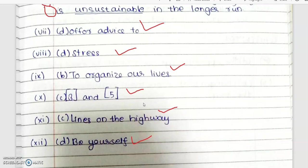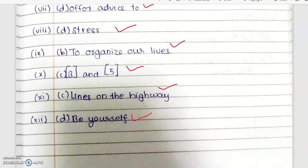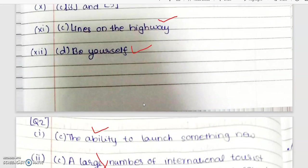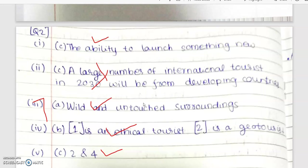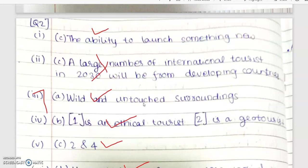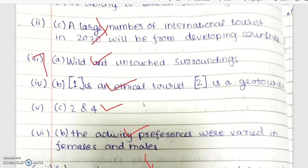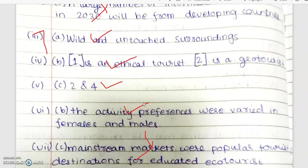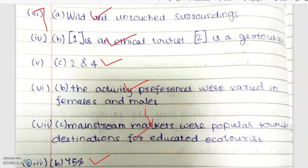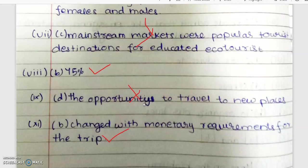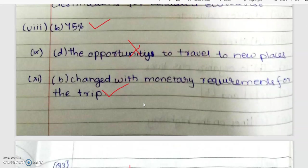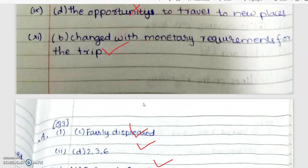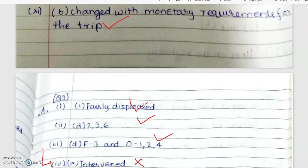Give your suggestions on how the student can improve in the reading section. You can see the neatness of the work — the paper is quite neat and well presented. Here also the student has lost marks because of understanding of the context, so suggest what strategy can be used for improving the reading skills.